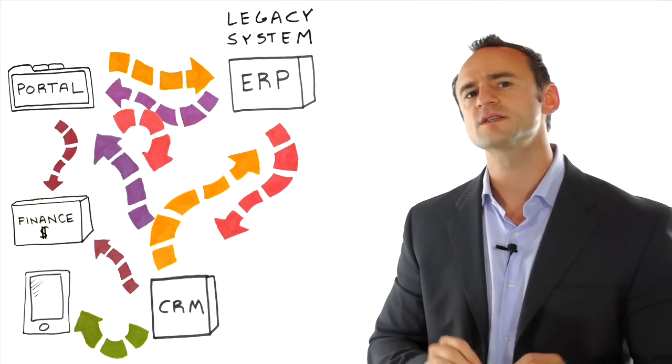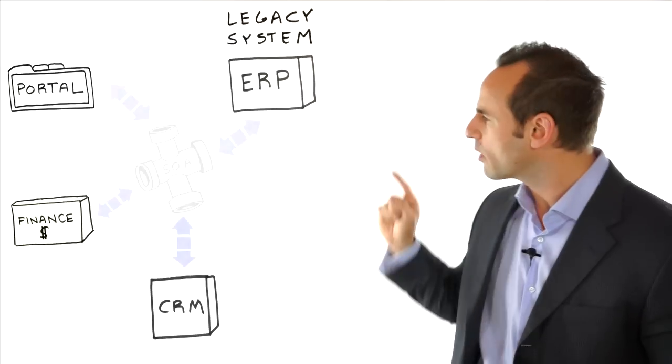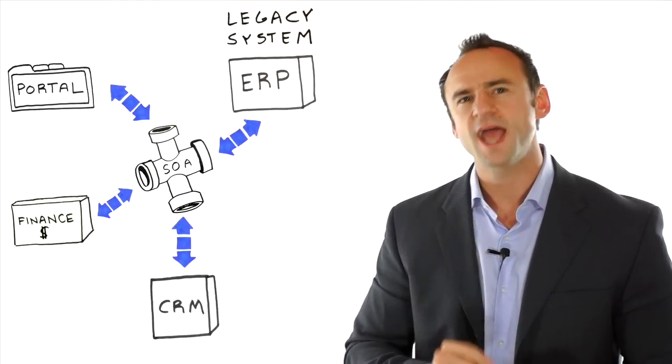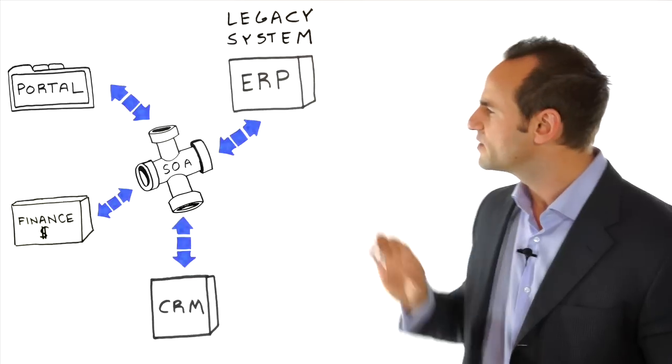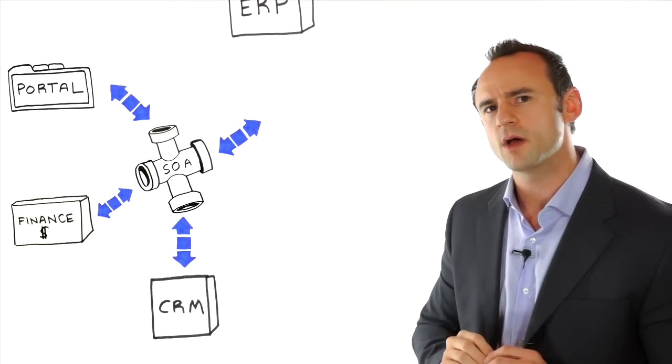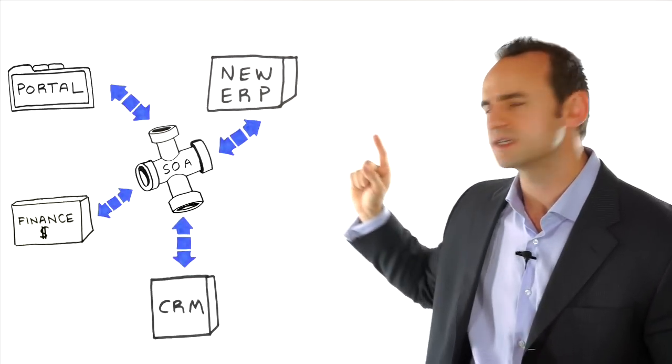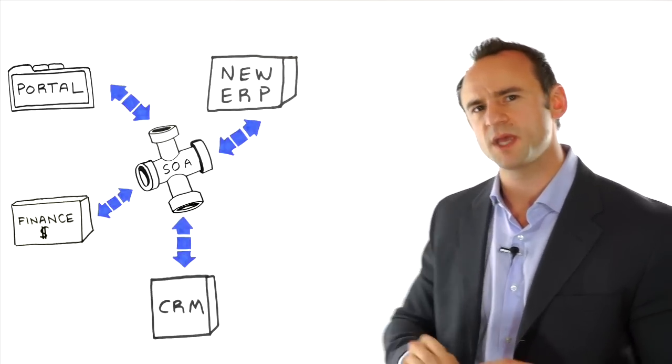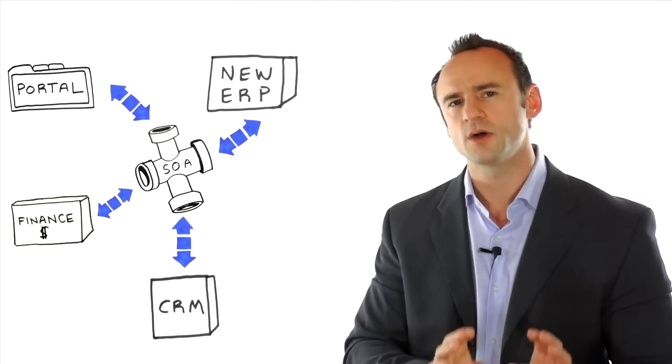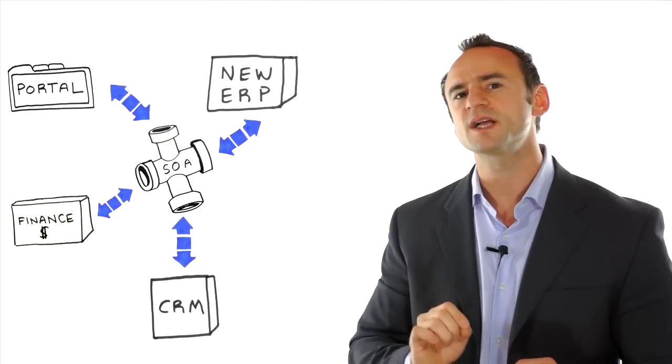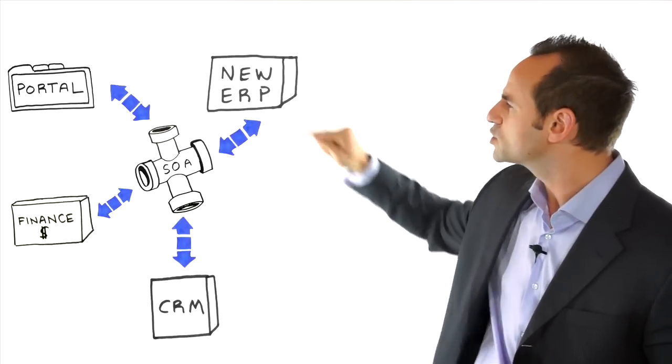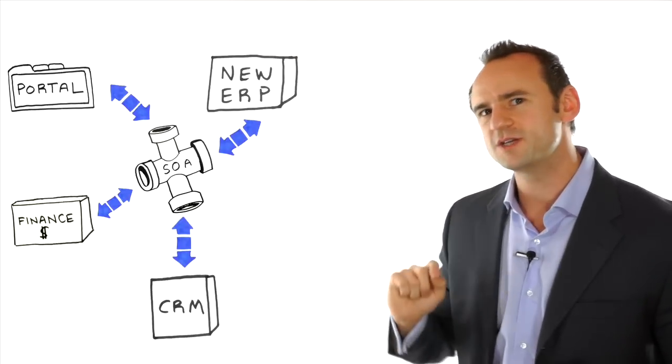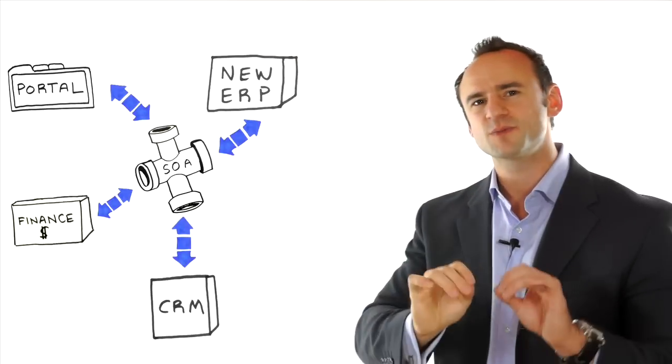So using things like a service bus, we're able to have a single place that everybody can communicate to that uses a single approach and uses a single skill set. This means that if somebody wants to change their ERP, they don't need to change all the ways in which the other systems talk to the ERP. If the web portal and the CRM system both speak to that ERP, because they do it through service-oriented architecture principles and something like a service bus, we can swap out that ERP and not have to change the existing integrations. We just need to change the one integration at the top specifically for that ERP.